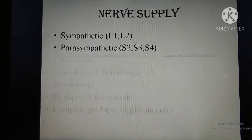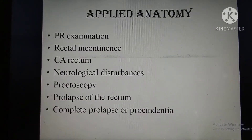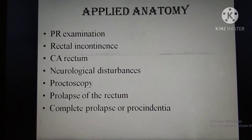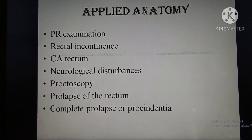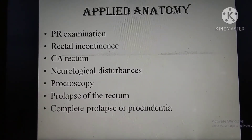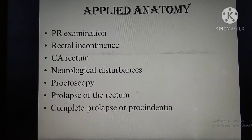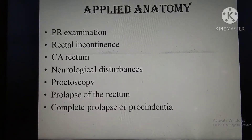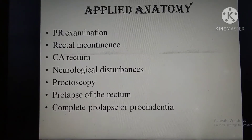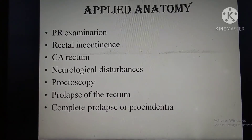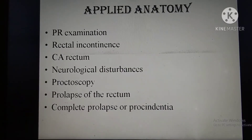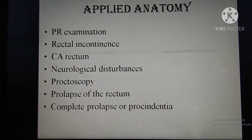Nerve supply: sympathetic from L1 and L2; parasympathetic from S2, S3, S4. Applied anatomy topics include: PR (per rectum) examination, rectal incontinence, carcinoma of the rectum, neurological disturbance, proctoscopy, and prolapse of the rectum — both complete prolapse and procidentia.